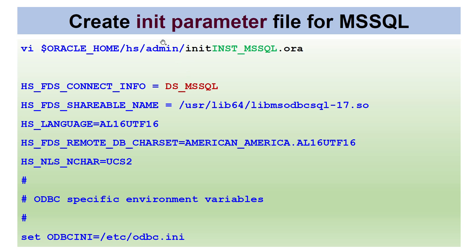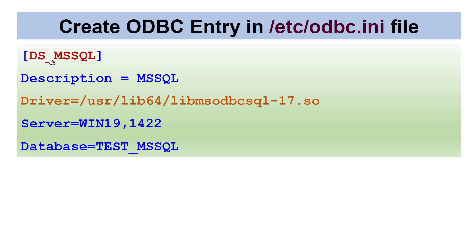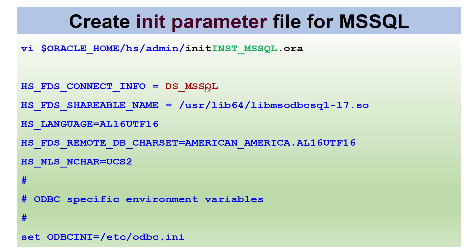Once the root work is done, we log in as the Oracle user and create the init parameter file. This file is created in Oracle Home/hs/admin, and the filename is init followed by your SID — for example, initinst.mssql.ora. The HS_FDS_CONNECT_INFO parameter must match the data source name you created in odbc.ini. The odbc.ini location tells Oracle where to look for the ODBC entry.